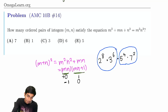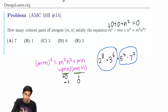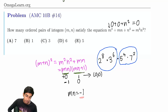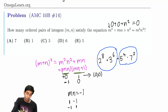So we have two cases. Case 1: mn = 0, meaning either m or n is 0. Plugging back into the original equation gives 0 + 0 + n² = 0, so n = 0 as well. This gives one solution: (0, 0). Case 2: mn = -1, so either (m,n) = (1,-1) or (-1,1). Both satisfy m + n = 0, making the (m+n)² term zero. This gives two more solutions, for a total of three solutions.